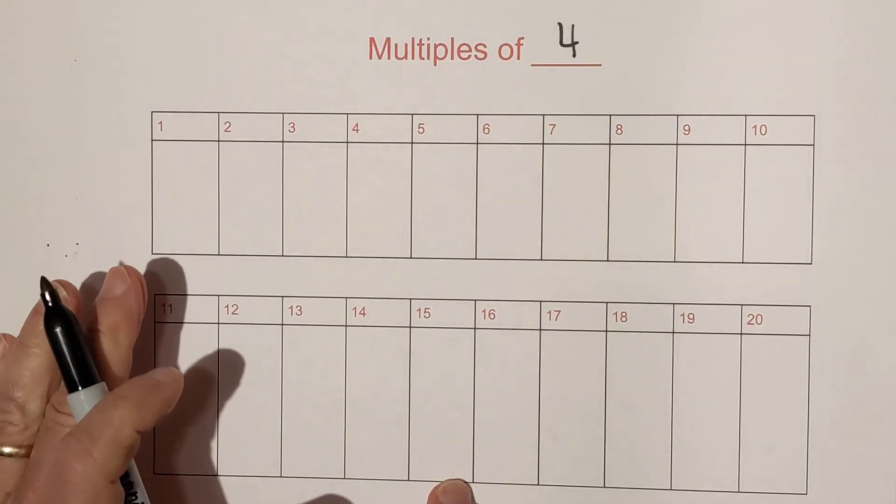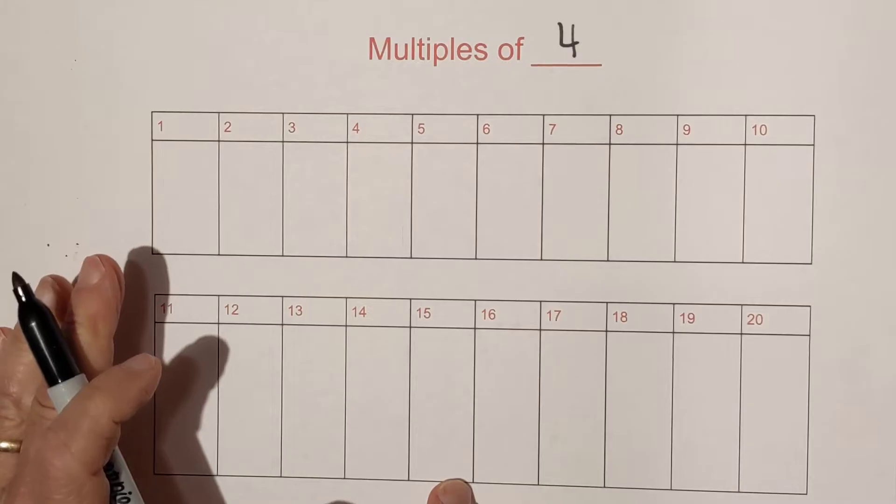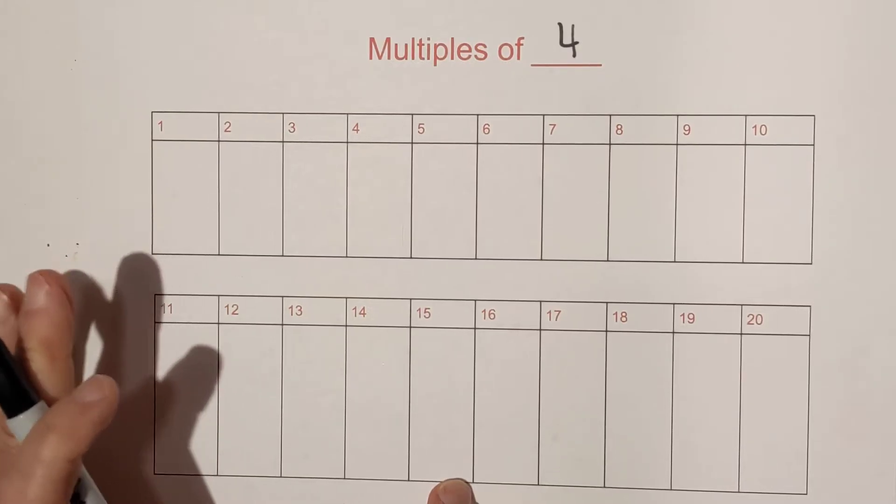Well first, they always end in the digits two, four, six, eight, or zero. So they're going to be even other than zero.